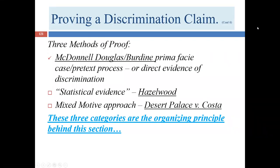Welcome to the third lecture covering our second module. We're going to continue talking about methods of proof. In the second module, we talked about the McDonnell-Douglas-Burdine back-and-forth process: the prima facie case that the plaintiff produces when there's evidence of disparate treatment, followed by the defendant's ability to present an explanation that there isn't really discrimination, and then the plaintiff's opportunity to rebut the defendant's case. We've completed that discussion and we're going to move on to disparate impact and statistical cases.